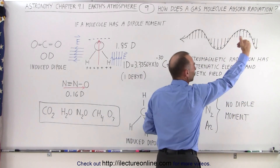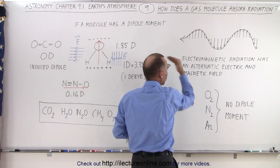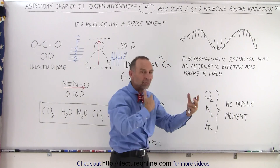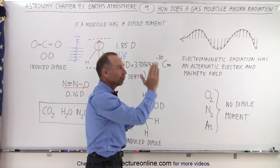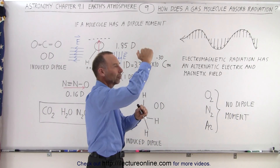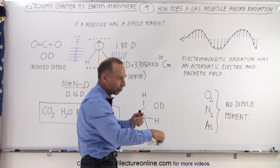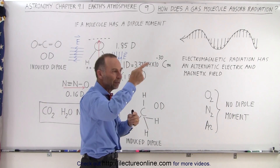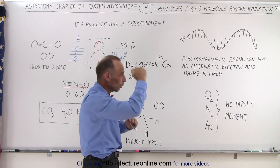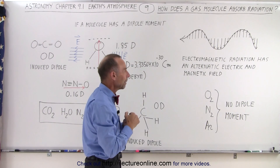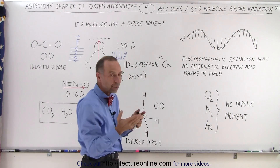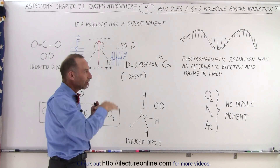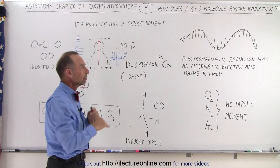Electromagnetic radiation as it moves through space or through the atmosphere has an alternating electric and magnetic field. The electric field is always becoming stronger, becoming weaker, turning around, going the opposite direction — always oscillating back and forth, always flipping direction, always changing amplitude or magnitude. The same is true for the magnetic field. In fact, the magnetic field and the electric field oscillations are perpendicular to one another.